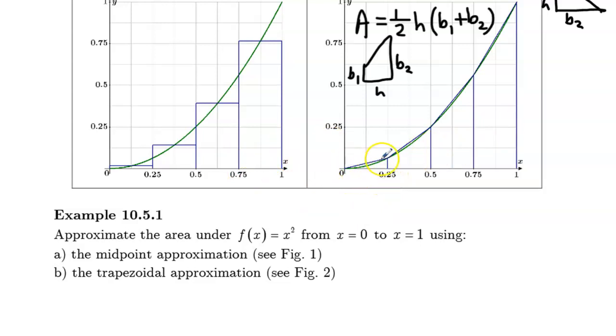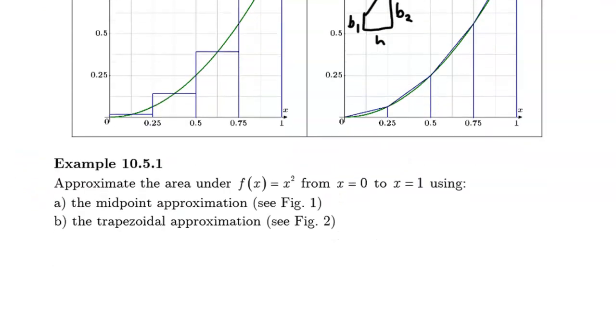Now, you might say to me, this first one right here is not a trapezoid because there is no base length right here. So really it's a triangle. But what I'm going to say is that it is a trapezoid with a base one length of zero. And I think we can still proceed from there.